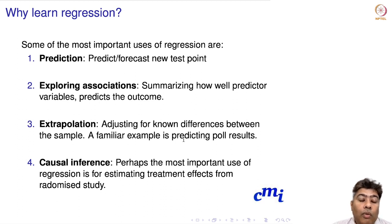Now, you must ask yourself: Why should we learn regression? Some of the most important uses of regression are—I would say the four most important uses of regression. First, prediction or forecasting a new test point. Second, exploring the association, or what we typically call inference—statistical inference in statistics—summarizing how well a predictor variable predicts the outcome.